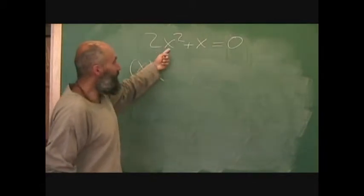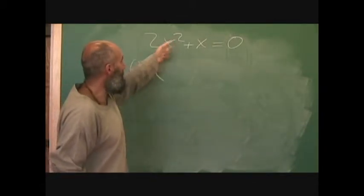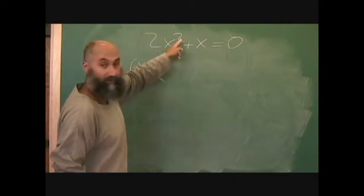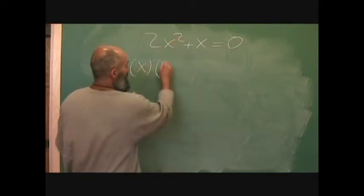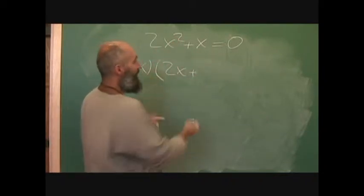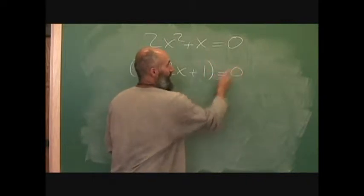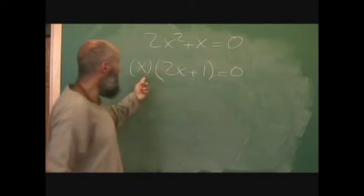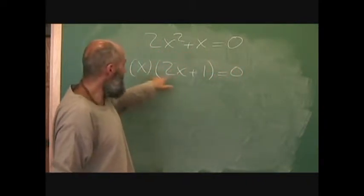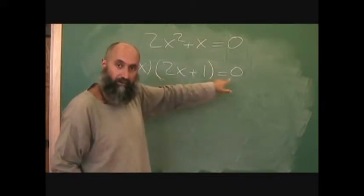Now you took out an x from this, so basically what you're doing is going 2x squared divided by x — one x kills one x — so you've got 2x here. And x divided by x gives you 1. And that's how you isolate this into one thing, multiply it to another thing to give you zero.